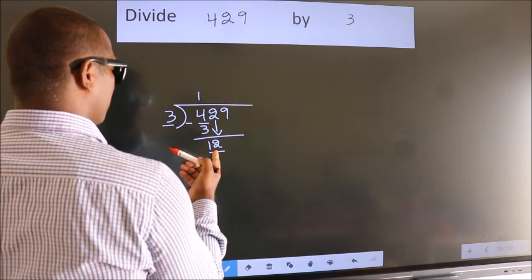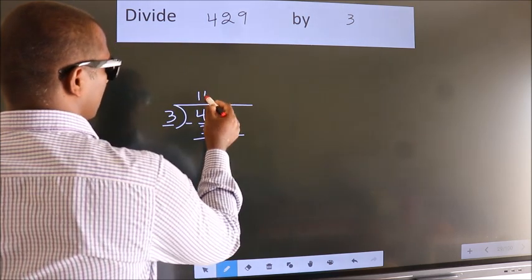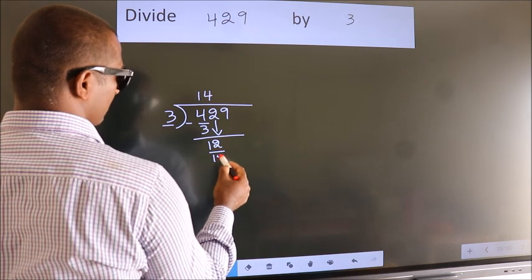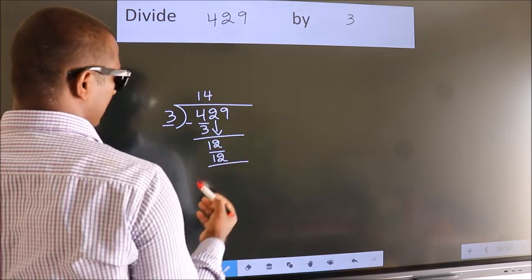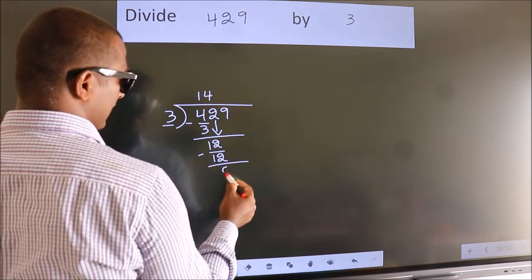When do we get 12? In 3 table, 3 4s 12. Now, we subtract. We get 0.